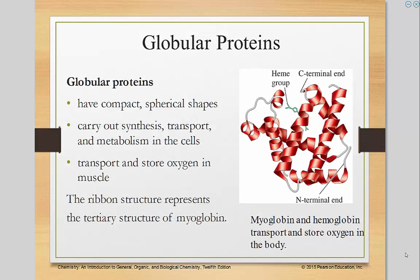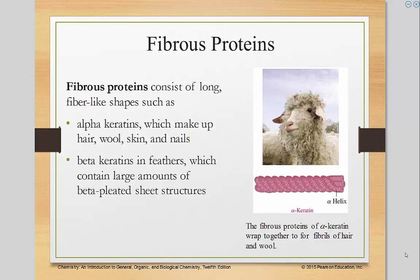Globular proteins have a compact spherical shape and carry out synthesis, transport, and metabolism in the cells. They transport and store oxygen in the muscles — for instance, here's myoglobin, which carries oxygen. Fibrous proteins consist of long fiber-like shapes, such as alpha keratins, which make up hair, wool, skin, and nails, and beta keratins in feathers, which contain large amounts of beta sheet structures.